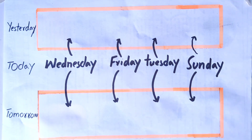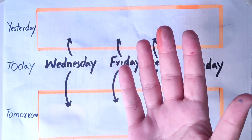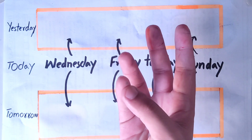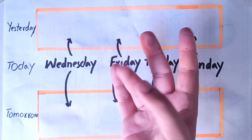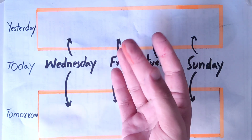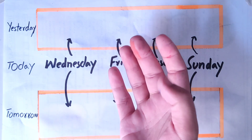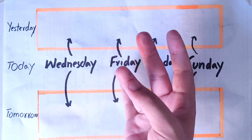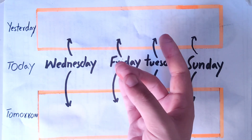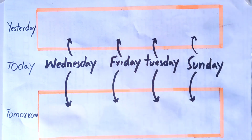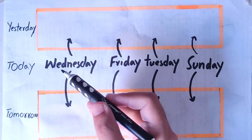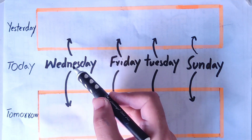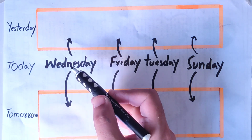Every week has 7 days: Sunday, Monday, Tuesday, Wednesday, Thursday, Friday, Saturday — and again Sunday. So here, suppose today is Wednesday.